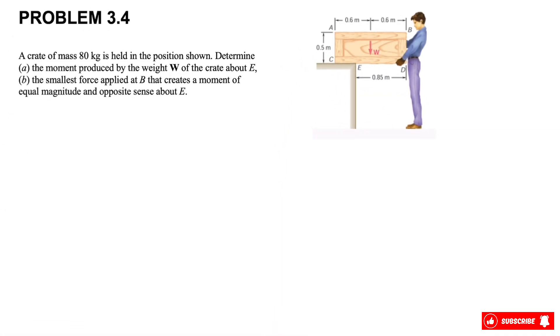Okay, welcome back guys. We have another question from chapter three. We have this crate that has a mass of 80 kilograms and is held in the position as we can see. We need to determine in part A the moment produced by the weight of the crate about point E, and in part B we need to find the smallest force to apply at B that creates a moment of equal magnitude and opposite sense about point E.